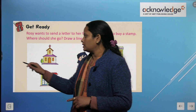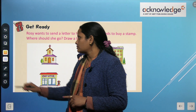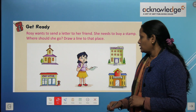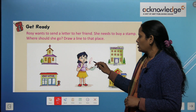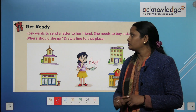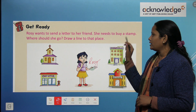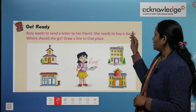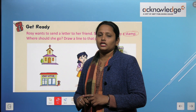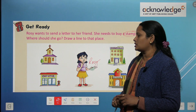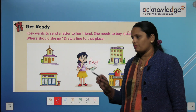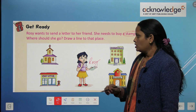Before starting the chapter, let's do this exercise. Rosie wants to send a letter to her friend. She needs to buy a stamp. Now, where should she go? Draw a line to that place.